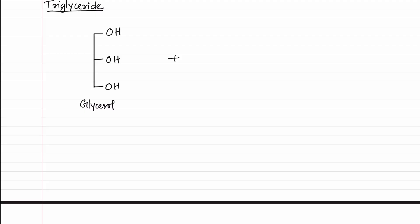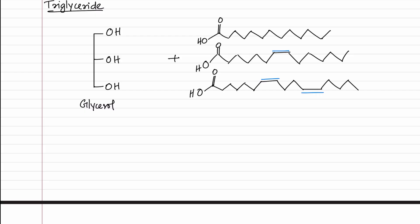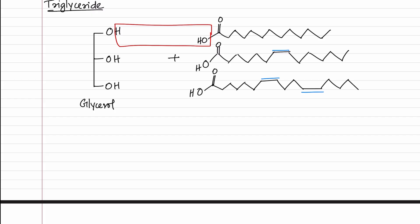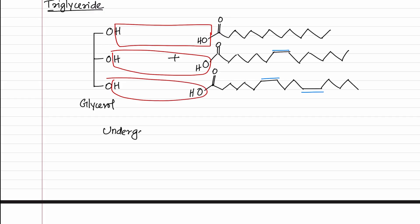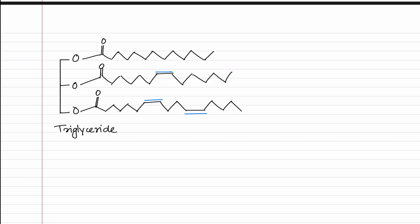This is combined with three fatty acids. Glycerol and these three fatty acids can undergo dehydration synthesis. Dehydration means losing water. In this reaction, we can see that they lose water — the OH group from the fatty acid and the OH group from glycerol — and what we get is plus 3H₂O because three water molecules are being lost as the reaction happens.